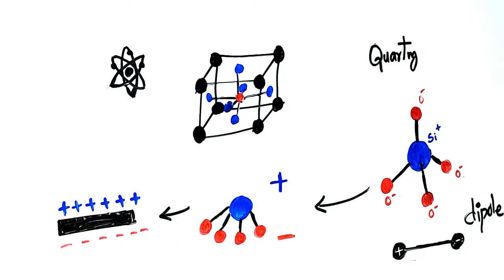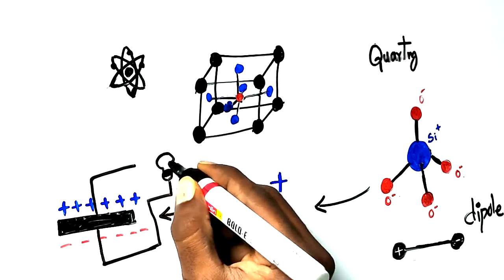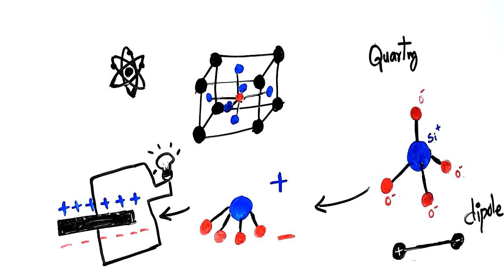Now, the crystal connects to a circuit to collect electricity. The flow of charge produces electricity.